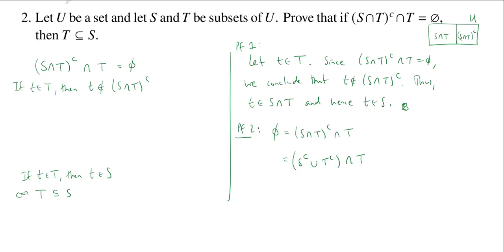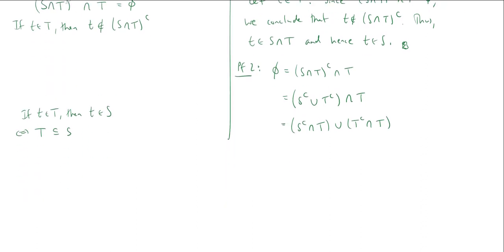Okay, but now I have the intersection distributing over a union. This is called DeMorgan's Law. And so I can write this as the intersection of the complement of S with T, union, the intersection of the complement of T with T. But T and its complement have no intersection. That's what the complement is all the stuff not in T. So, this piece here is just equal to the empty set. Now, I'm taking a union with an empty set. Well, the empty set doesn't give you anything new. So, this is just the intersection of T with S complement.